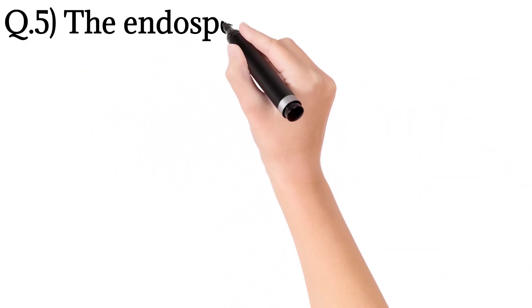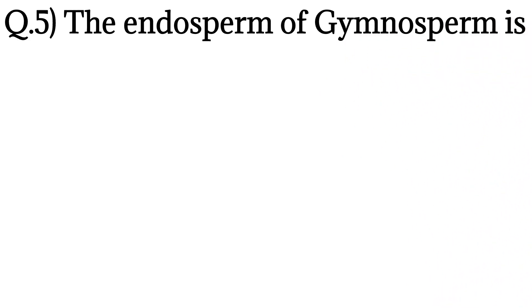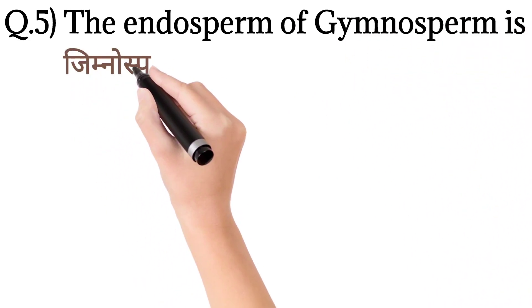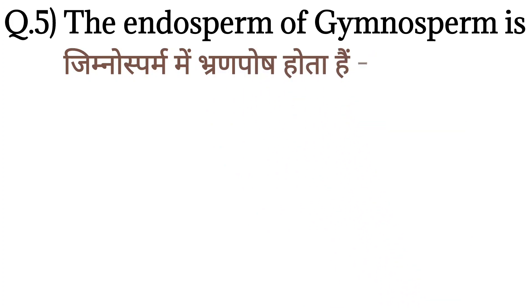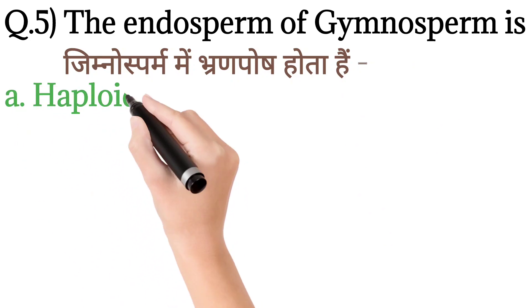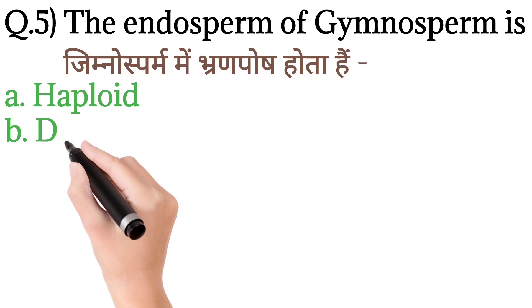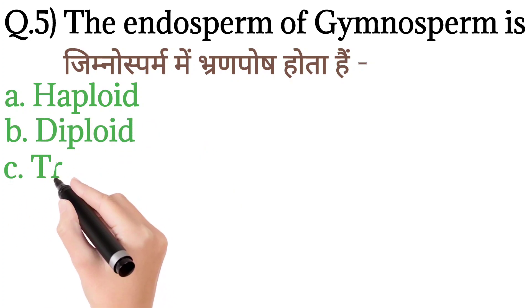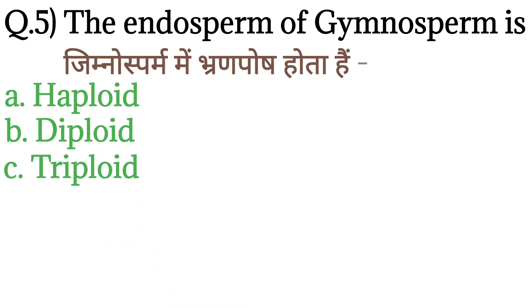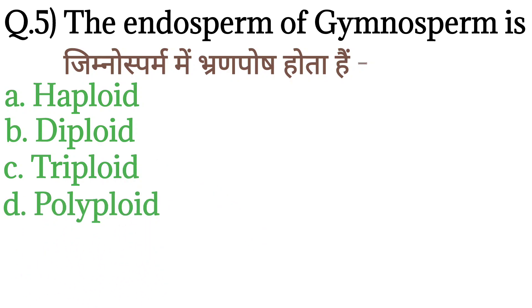Question number 5: The endosperm of gymnosperm is — gymnosperm mein endosperm kaisa hota hai? Option A: Haploid. Option B: Diploid. Option C: Triploid. And option D: Polyploid.